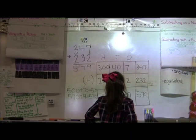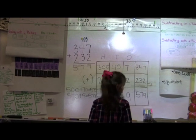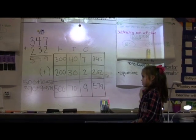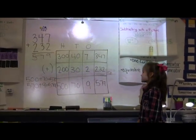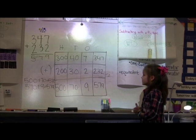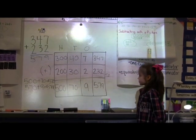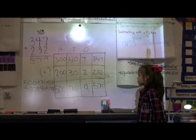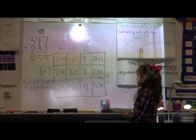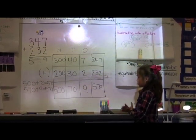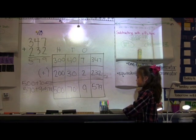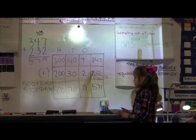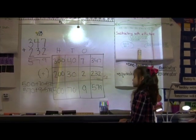I broke up 337 to 300 plus 400. Plus what? Oh, 300 plus 40 plus 7. And then I broke up from 230 to 230. 200 plus 30 plus 2. And then I did 300 plus 200 equals 500. 40 plus 30 equals 70. And 7 plus 2 equals 9.